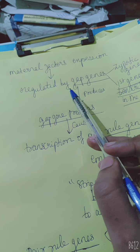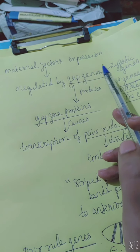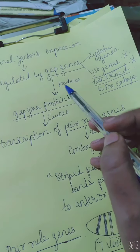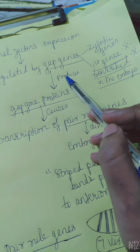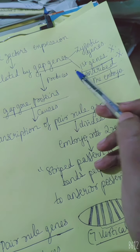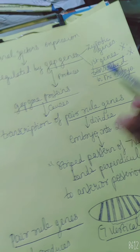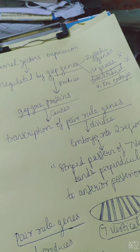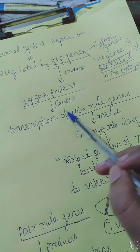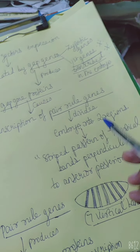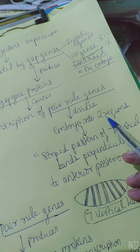To recap: the maternal factors and the maternal genes mentioned in the previous video are regulated by genes known as GAP genes. GAP genes are zygotic genes and are the first genes transcribed in the embryo. Just as maternal genes gave rise to maternal gene proteins, GAP genes produce GAP gene proteins — and the function of GAP gene proteins is to cause the transcription of another set of genes known as pair-rule genes.